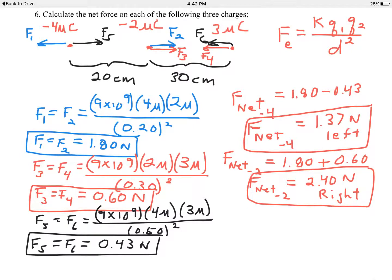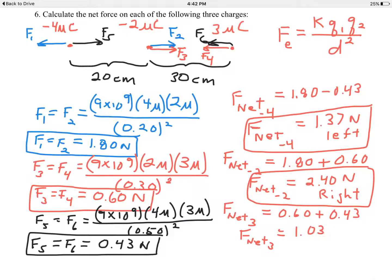Finally, the 3 microcoulomb charge. Looking at the diagram, F sub 4 points to the left and F sub 6 also points to the left. F sub 4 is 0.60 plus F sub 6 at 0.43 — since they're both in the same direction, I add them arithmetically. The net force is 1.03 newtons to the left. That's my final answer — I've found the net force on each of the three given charges.